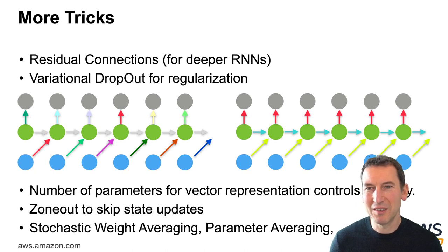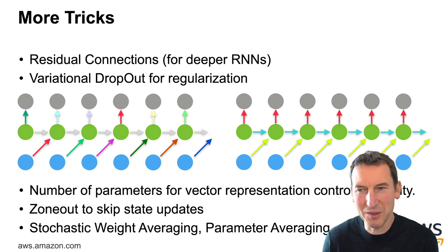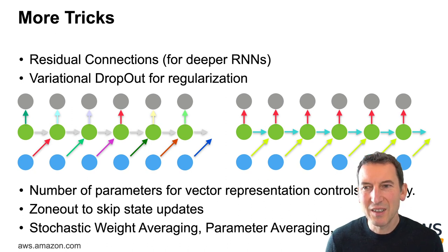Or you can use zone out to skip state updates. That also makes things more resilient to when you skip character, skip tokens. There's stochastic weight averaging, parameter averaging. A lot of those tricks allow you to improve the accuracy quite a bit. There's a nice paper by Merity et al. that goes through this in great detail. Again, as always, all the references are in the book chapters. That's a much more convenient place where to find them.